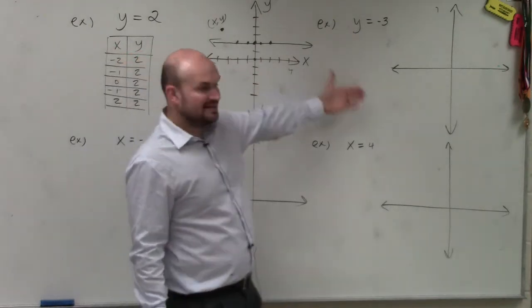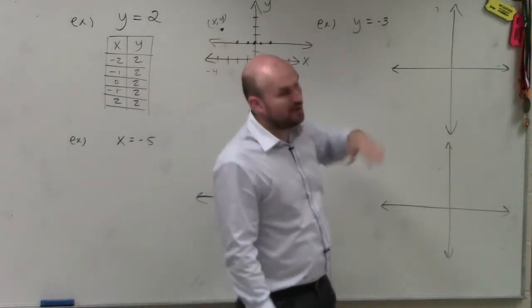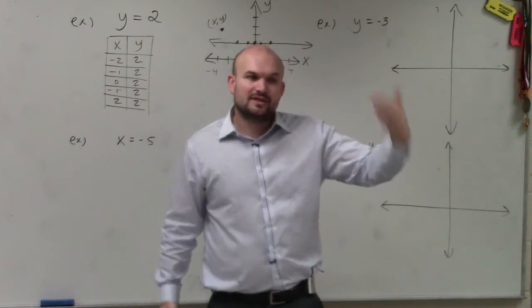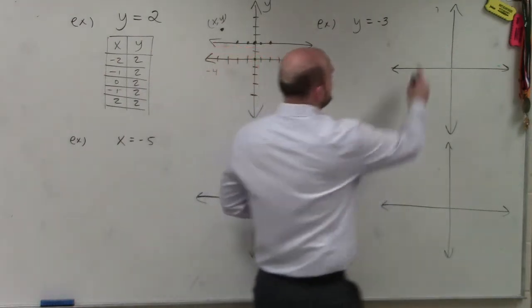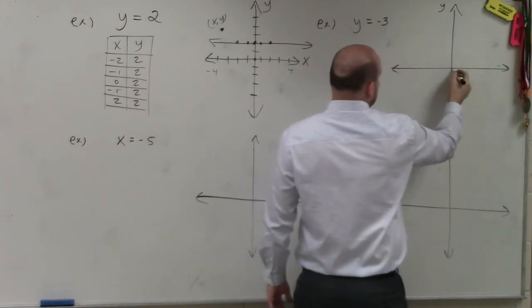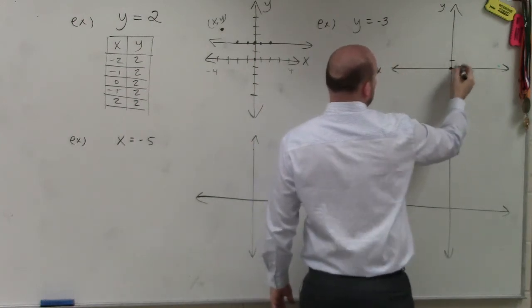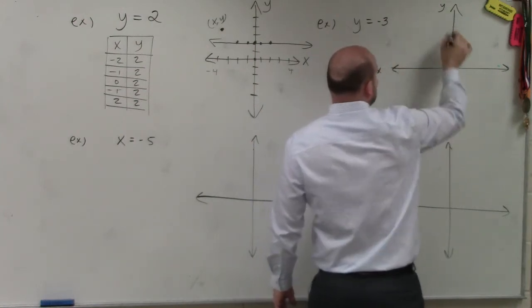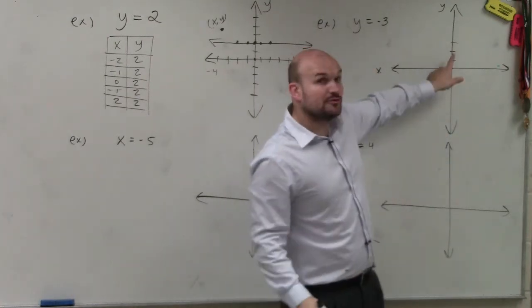So what's nice about this, to kind of speed it up a little bit, is here you have y equals negative 3. Well, since I know that's a horizontal line, another way to kind of think about this is remember here's your y-axis, right? And here's the x-axis. Well, here's 0 on the y-axis. Here's y equals 1, y2, y3. So at that point here, 3 is on the y-axis.